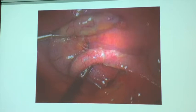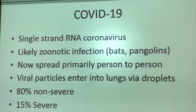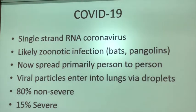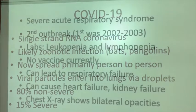Let's talk about another patient — this is relevant right now. A 65-year-old female comes with fever, cough, and shortness of breath. She recently traveled to Italy. As you might expect, this is COVID-19. COVID-19 is a single-strand RNA coronavirus, likely a zoonotic infection — meaning it comes from animals, including bats or pangolins. It spreads primarily person to person when viral particles enter the lungs via droplets. 80% of infections are non-severe, 15% are severe, and 5% are critical.